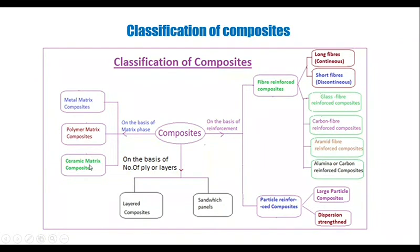Based on the reinforced phase, composite materials are classified into two categories: fiber reinforced composites and particle reinforced composites. Particle reinforced composites are once again classified into large particle composites and dispersion strengthened. Fiber reinforced composites are classified into long fibers or continuous fibers and short fibers or discontinuous fibers. These are further classified into glass fiber reinforced composites, carbon fiber reinforced composites, aramid fiber reinforced composites, and alumina or carbon reinforced composites.